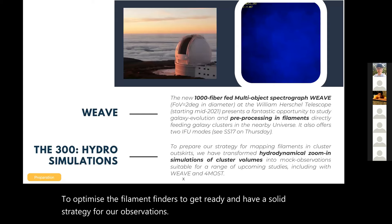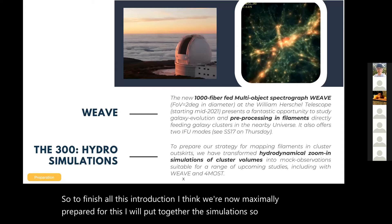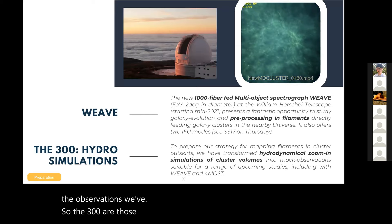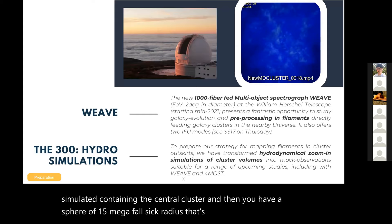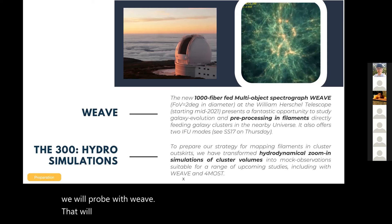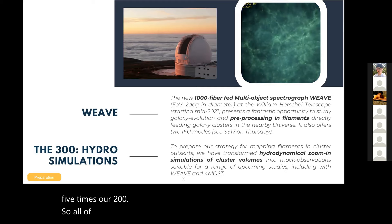We had to test it to optimize the filament finders to get ready and have a solid strategy for our observations. So to finish all this introduction, I think we're now maximally prepared for this. I will put together the simulations, the 300, and the observations, WEAVE. The 300 are those 324 zoom-in simulations, each re-simulated containing the central cluster. Then you have a sphere of 15 megaparsec radius, roughly matched to what we will probe with WEAVE, which will target 20 clusters very nearby and we cover to at least five times R200.